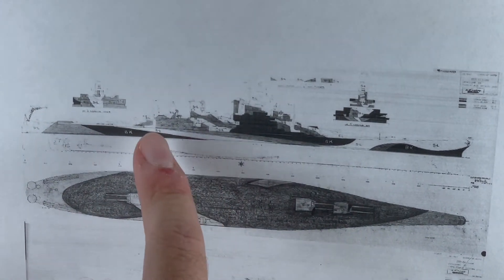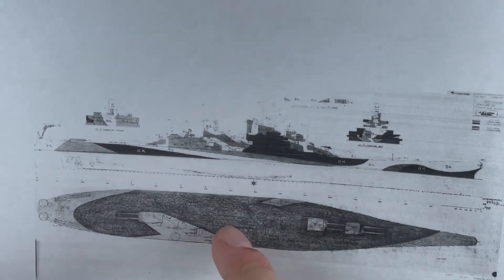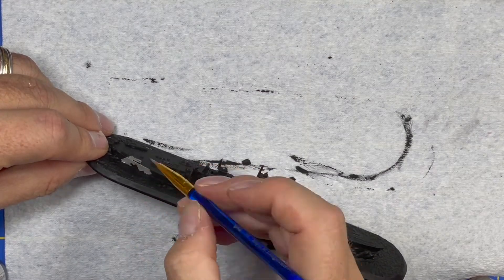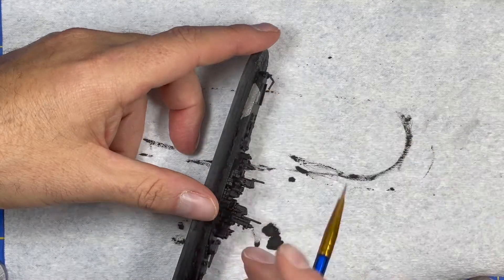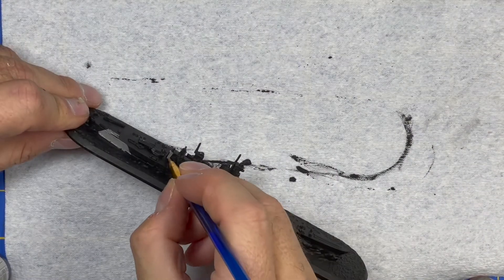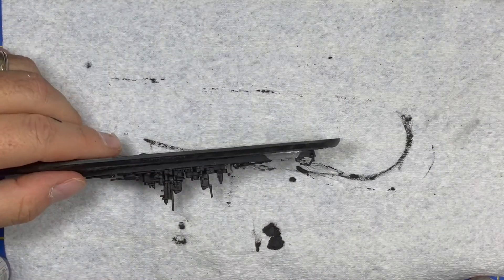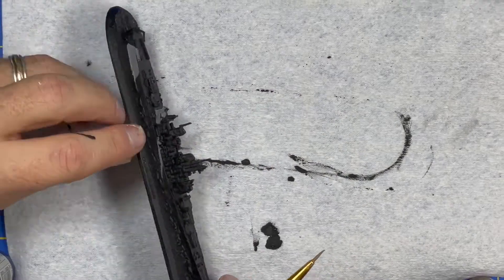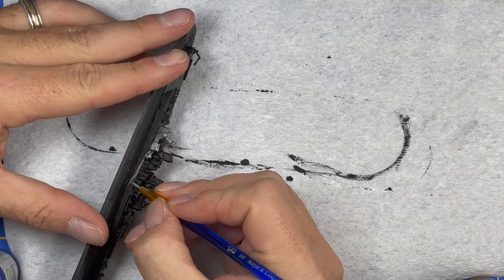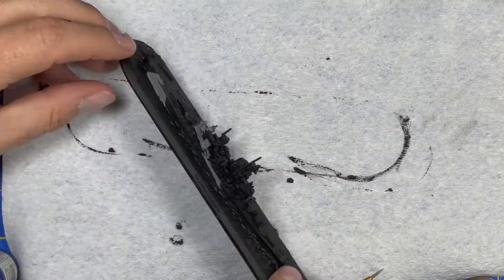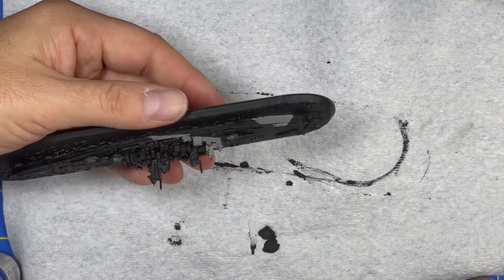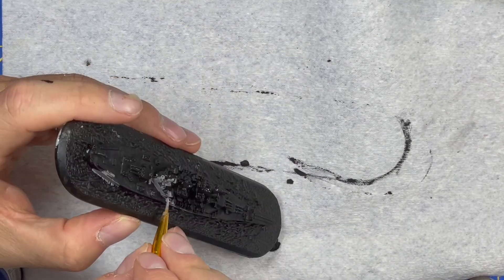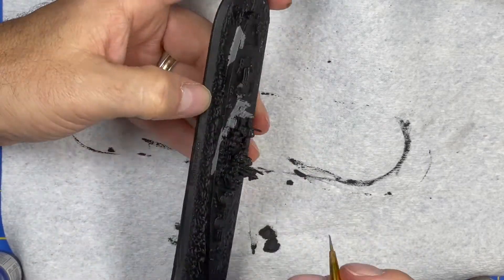A little history about USS Missouri BB-63: she is of course an Iowa-class battleship and third ship to be named after the state of Missouri. She was the last battleship commissioned by the United States, but as we've said before is probably the most famous of all of the ships of the United States Navy during World War II, even more so than the Hornet or the Enterprise, which were aircraft carriers.